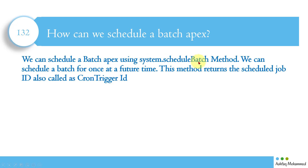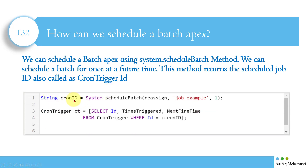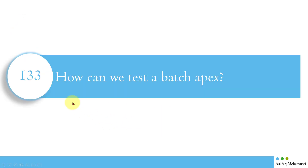How can we schedule a batch Apex job? We can schedule a batch using the System.scheduleBatch method to run it once at a future time. This method returns a job ID, also called a CronTrigger ID. For example: System.scheduleBatch(instance, 'Job Example', 1) will run the batch after 1 minute, once. You can verify it by querying CronTrigger: SELECT Id, TimesTriggered, NextFireTime FROM CronTrigger WHERE Id = :cronId.